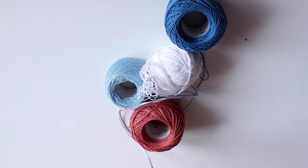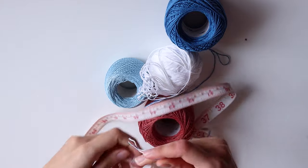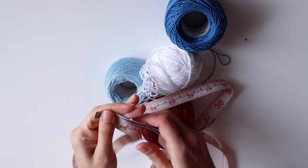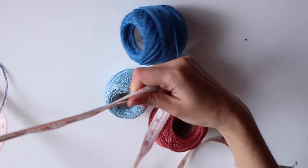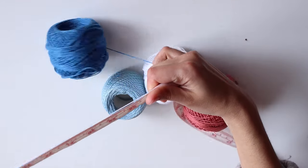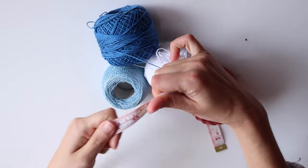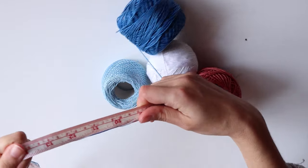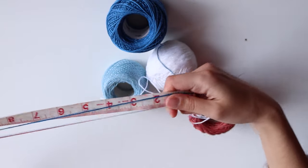To make the exact same bracelet as me, you'll need 4 colors. I'm using crochet thread. Use a measuring tape or ruler to measure and cut 2 strands of each color with 1.5 cm each. You'll need to have 8 strands in total, then we are folding them up.